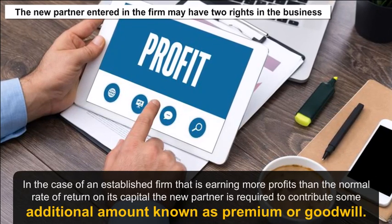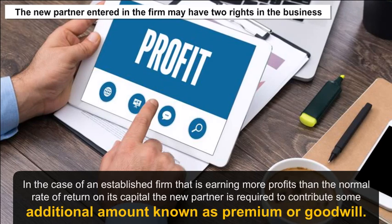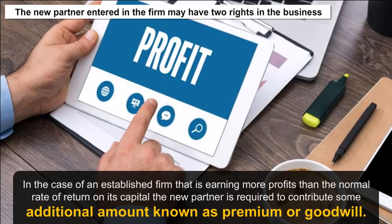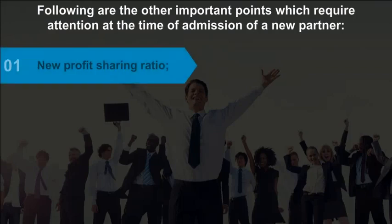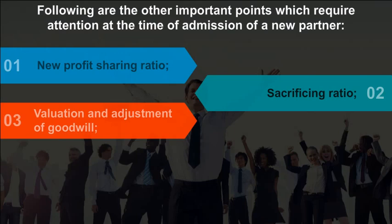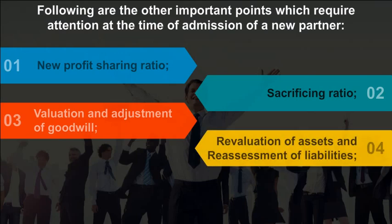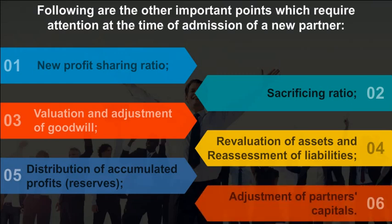In the case of an established firm earning more profits than the normal rate of return on its capital, the new partner is required to contribute an additional amount known as premium or goodwill. Important points at the time of admission include: 1. New profit sharing ratio, 2. Sacrificing ratio, 3. Valuation and adjustment of goodwill, 4. Revaluation of assets and reassessment of liabilities, 5. Distribution of accumulated profits, 6. Adjustment of partners' capitals.